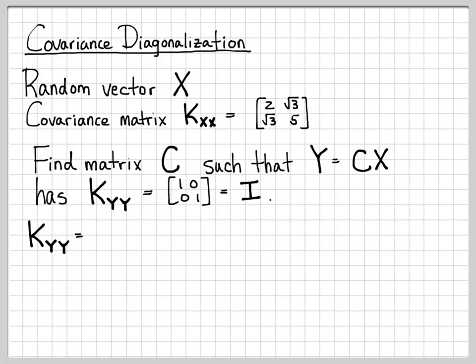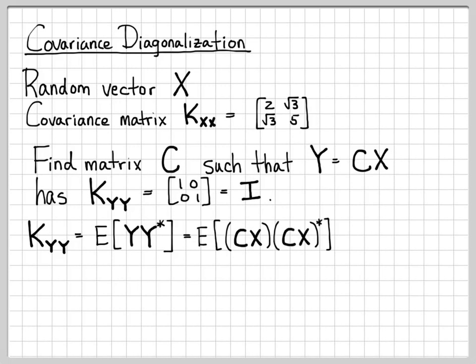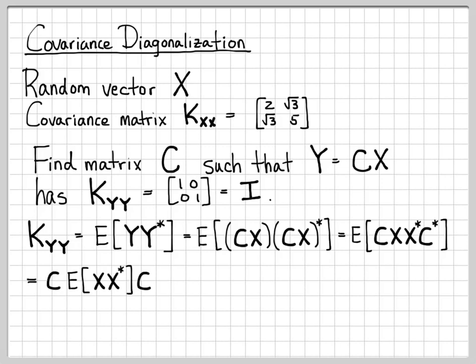Let's first work out what K_yy is equal to. By definition, it's the expected value of y times y complex conjugate transpose — if we're working with real-valued random vectors, this is just the transpose. We know y equals C times x, so substituting in, and pulling the constant C matrices out left and right, we're left with C times K_xx times C complex conjugate transpose.